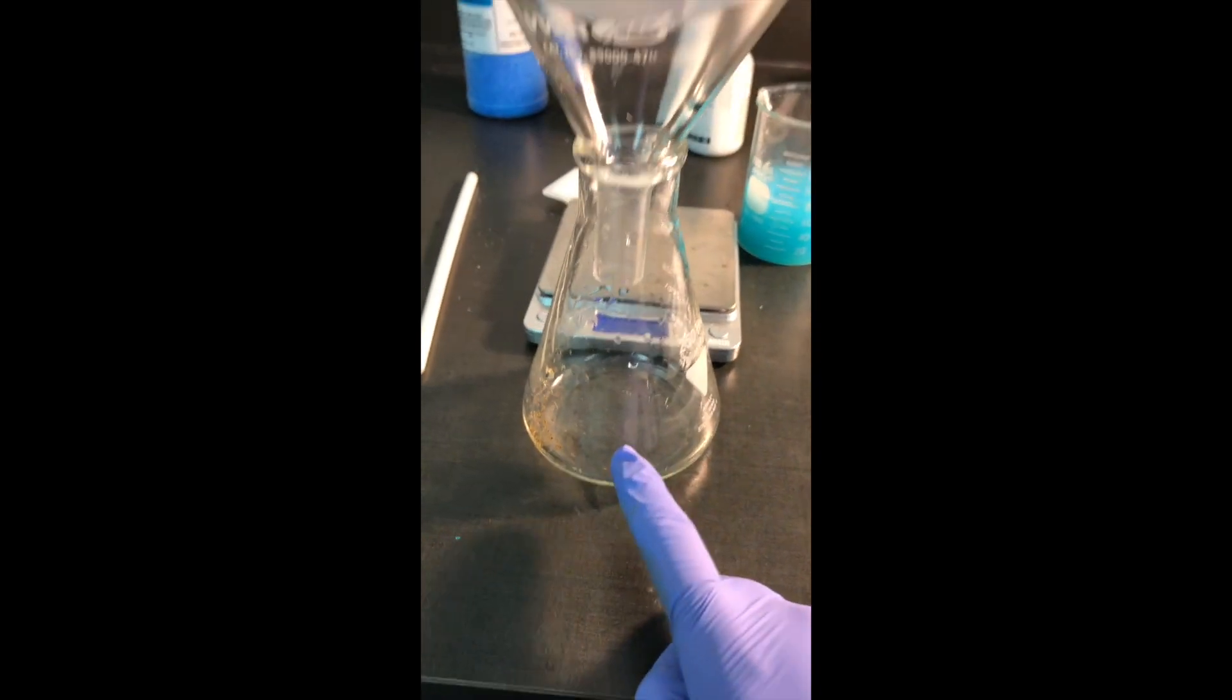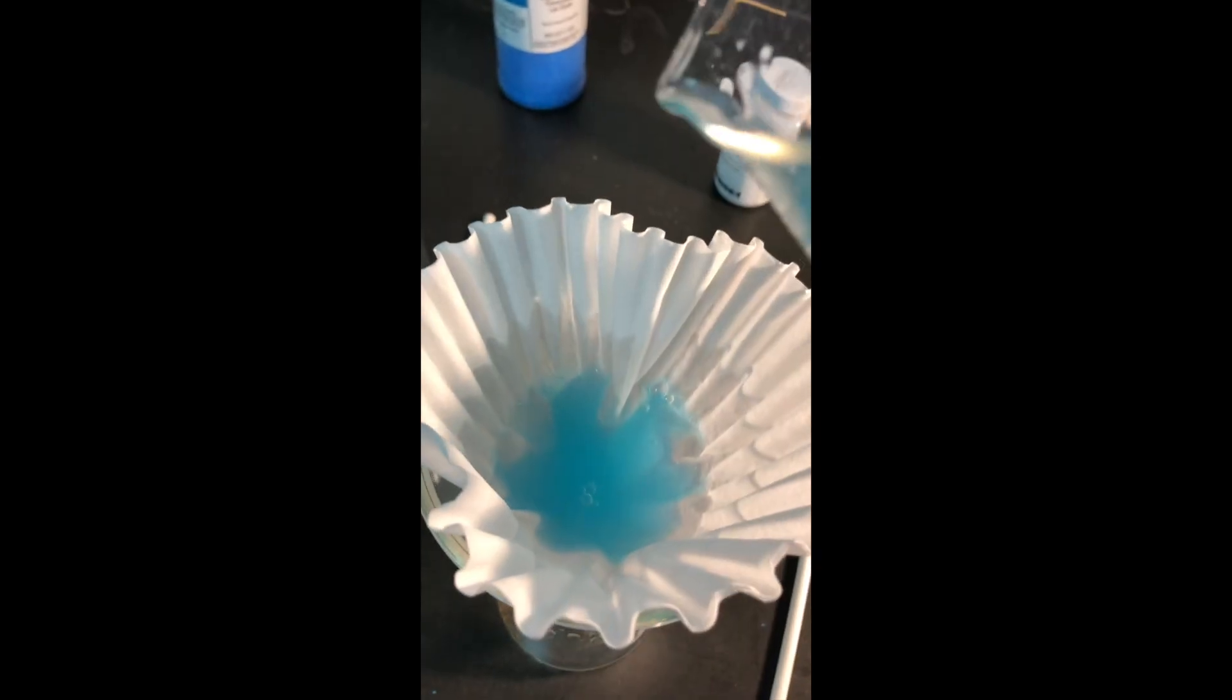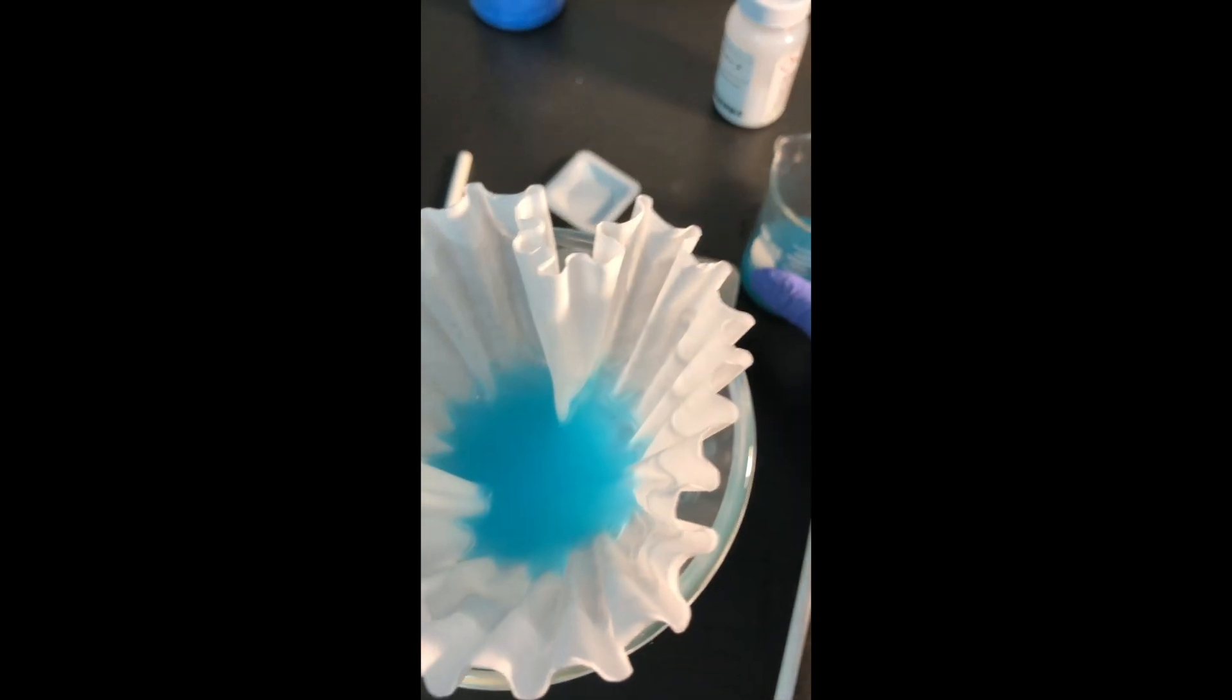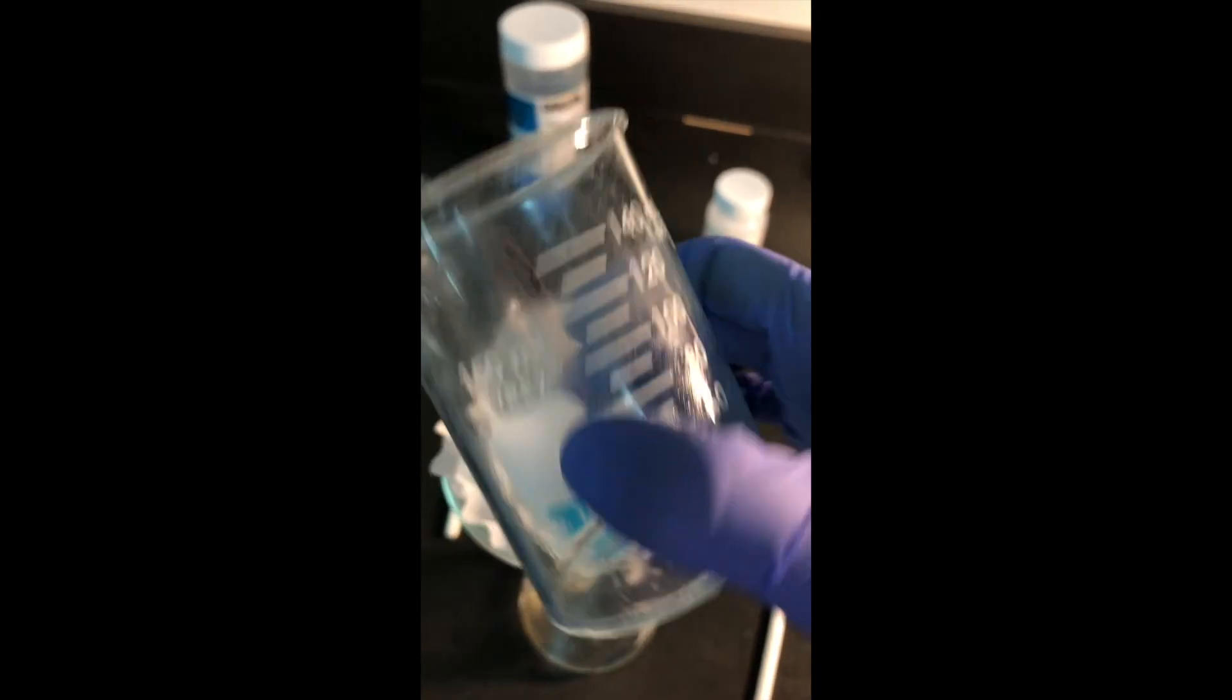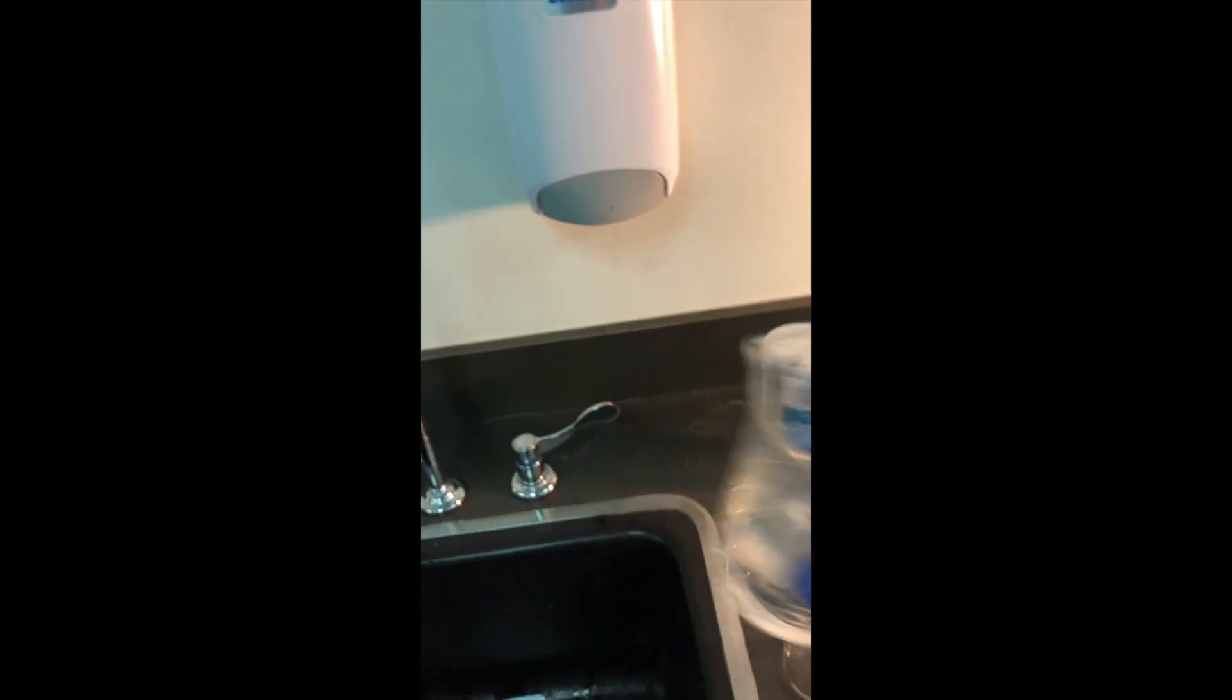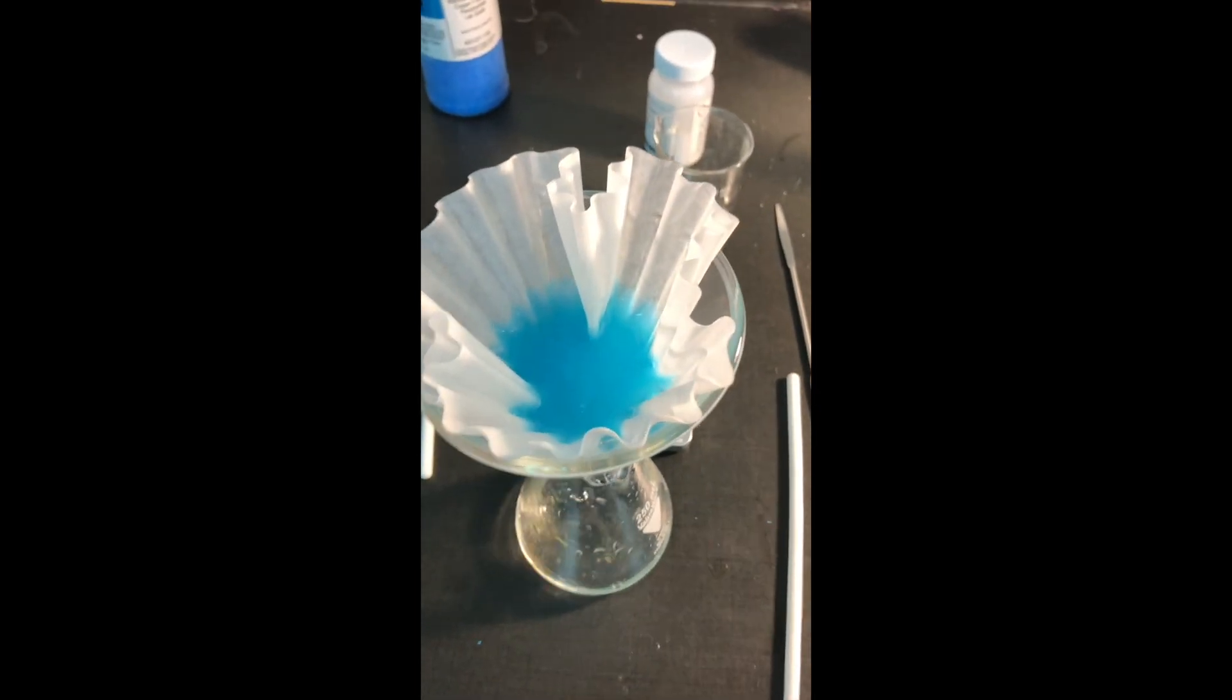So once we have our Erlenmeyer flask with the funnel and the coffee filters, you can pour your solution into the coffee filter slowly. If you pour too fast, you might spill some solution. And that would pretty much be a failure of your experiment because we're trying to collect all of this beautiful blue solid. I'm just slowly pouring it in here. We don't want to overflow. If you see there's still a lot of blue in your beaker, you can do the same thing I did before, which is add a little bit of water. Don't pour this down the sink. This is your precious product. So this is happily dripping out all the liquid. We want to get rid of all of that liquid. So I'm going to pour the rest of this water in here from rinsing out my beaker.